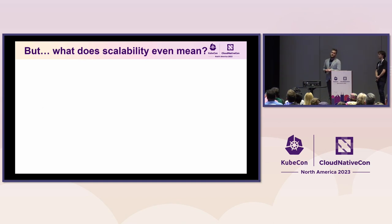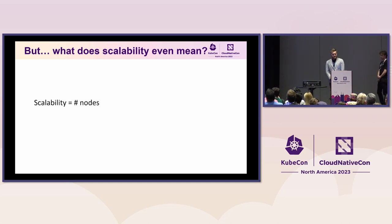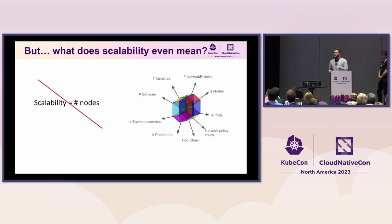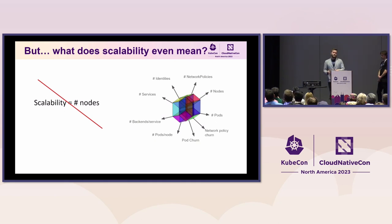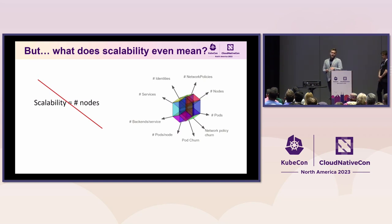Let's understand what scalability even means. Our title mentions 100,000 nodes, but scalability is not just the number of nodes — it's way more than that. When thinking about scalability of Kubernetes, there are many more dimensions we care about. Nodes is just one dimension; we also care about how many pods you have, how many network policies, how many services, or how many backends those services have. We need to think about all those dimensions when testing networking and scalability.